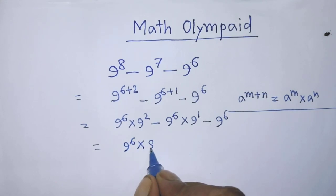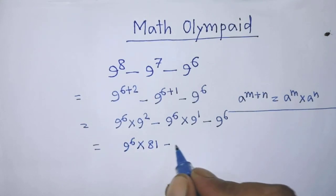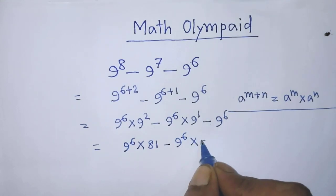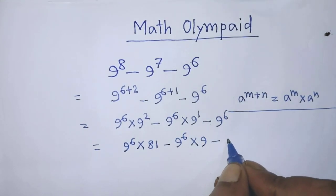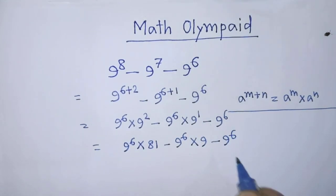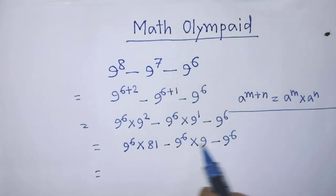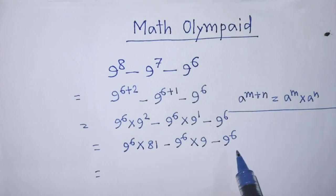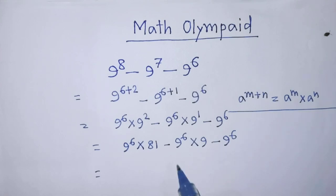After that it becomes: 9 to the power 6 times 81, minus 9 to the power 6 times 9, minus 9 to the power 6. In this expression there are 3 terms, and the common factor of all 3 terms is 9 to the power 6.